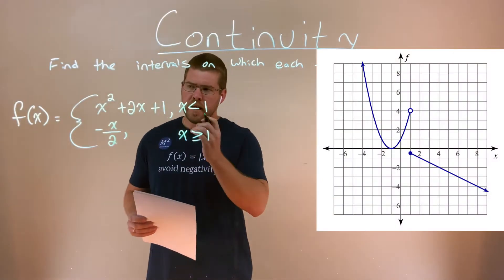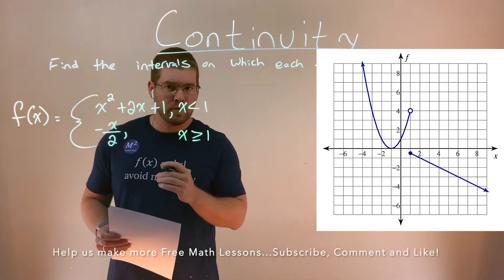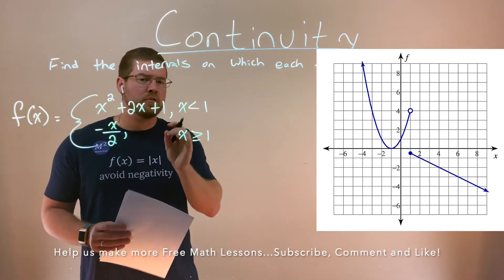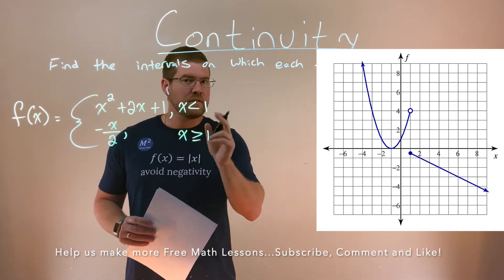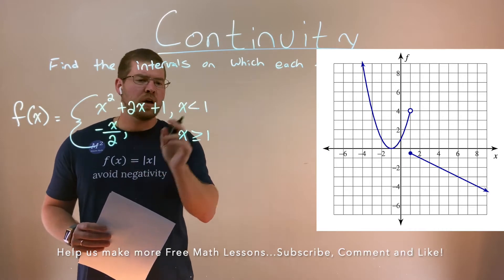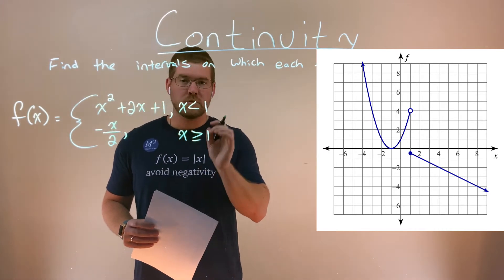We're given this problem right here. f of x is equal to the piecewise function: x squared plus 2x plus 1, where x is less than 1, and negative x over 2 when x is greater than or equal to 1.